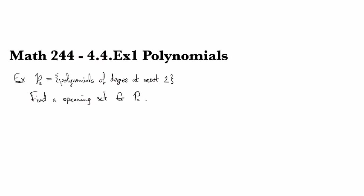Well, maybe the first thing to do is to write down what the set of polynomials of degree at most 2 looks like. It looks like the collection of all things of the form a0 plus a1x plus a2x squared, and here these coefficients are just any number that they want to be.